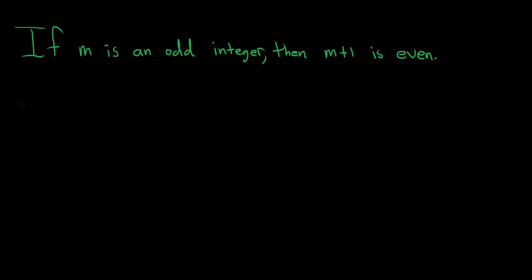Let's go through this proof very carefully. The statement is if m is an odd integer then m plus one is even. This is an if P then Q type statement. In order to give what's called a direct proof, the normal usual way of proving this, you assume that P is true.